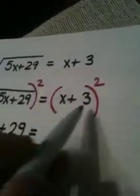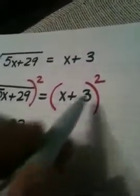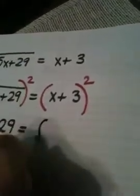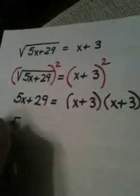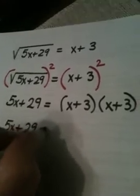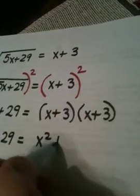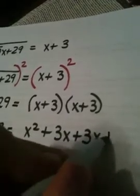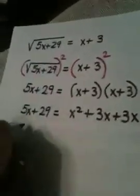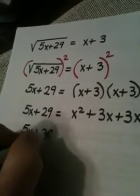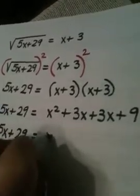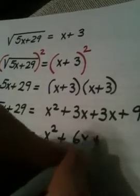On this side, there's no radical. You are squaring a binomial, and to square a binomial you are going to use the FOIL method — First, Outer, Inner, and Last. So we end up getting 5x plus 29 equals x squared plus 6x plus 9.